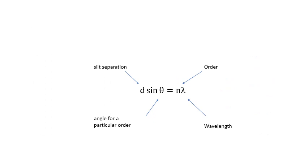And this is the equation that you need to know. D sine theta equals N lambda. D is the slit separation. Theta is the angle for a particular order. Whether it's the first order, the second order, etc. The number of the maximum. N is the order. Lambda is the wavelength.